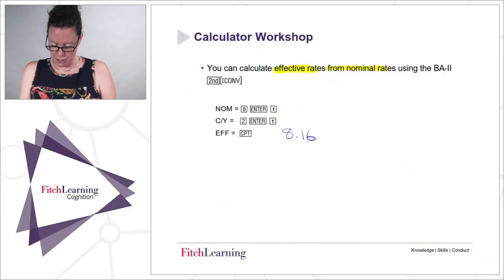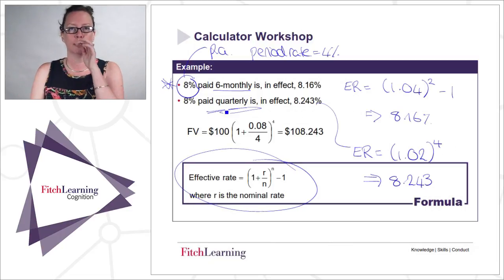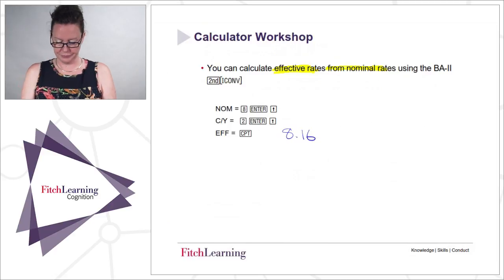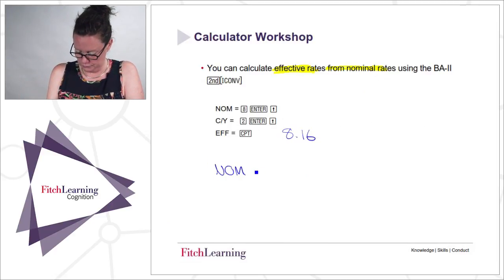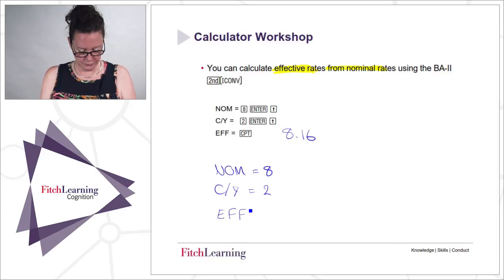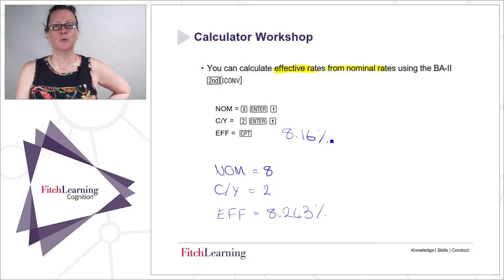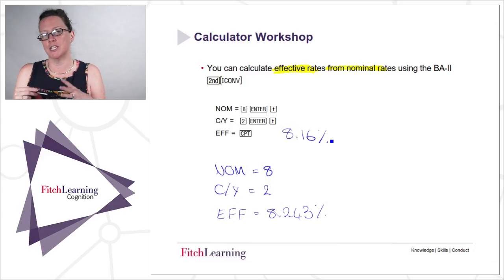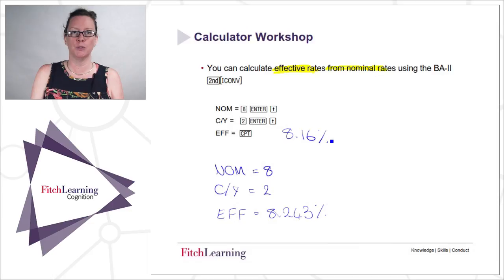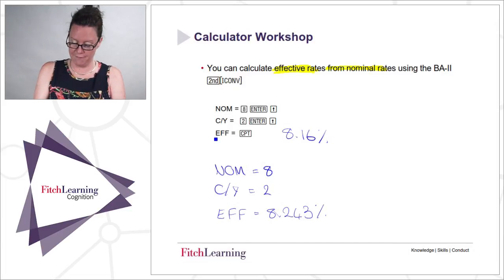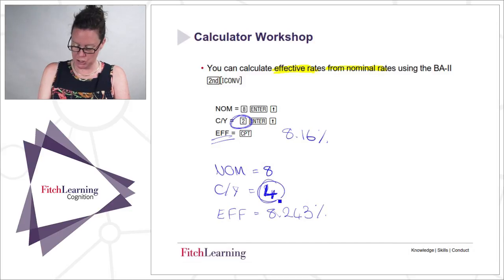Have a go at the second example where it's still 8% but now interest is paid quarterly. You should get 8.243%. If you've got follow-on questions using similar data, you don't have to clear everything — you can leave the nominal at 8%, just change the CY to four, scroll up to the effective rate and recompute. So just change that one number.